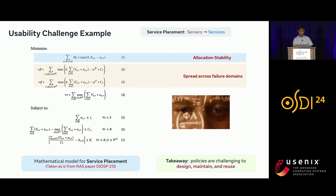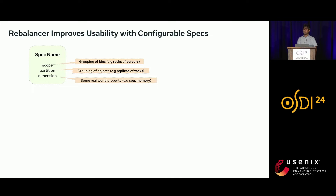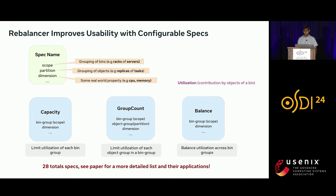To that end, we came up with the notion of specs — a set of rules that apply on a set of objects and a set of bins across some real-world property of interest. You can select the set of bins using a scope, select the set of objects using a partition, and select the real-world property to apply the rule on. One common property we want to model is utilization — the contribution of objects in a bin towards that bin. For the CPU dimension, it's CPU utilization; for memory, it's memory utilization.